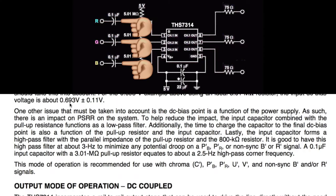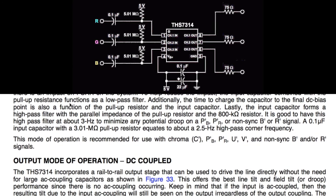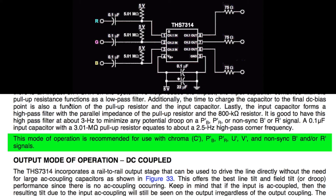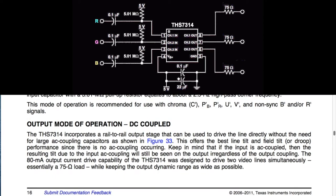That pretty much explains why these input capacitors need to be 0.1 microfarad. TI basically tells you to use AC biased inputs, stating this mode of operation is recommended for use with chroma C — the non-sync signal for S-Video — progressive blue, progressive red, YUV, and non-sync B and/or R signals.